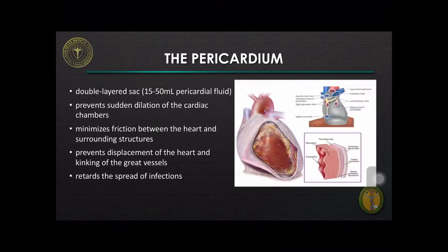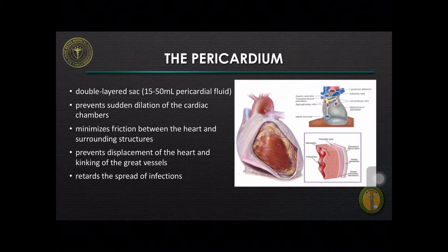Before discussing the different disease entities, let us review first the anatomy and normal functions of the pericardium. The pericardium, also called the pericardial sac, is a double-walled sac containing the heart and the roots of the great vessels. The pericardial sac has two layers: a serous, also called the visceral, and a fibrous, which includes the parietal pericardium. It encloses the pericardial cavity, which contains around 15 to 50 ml of pericardial fluid.